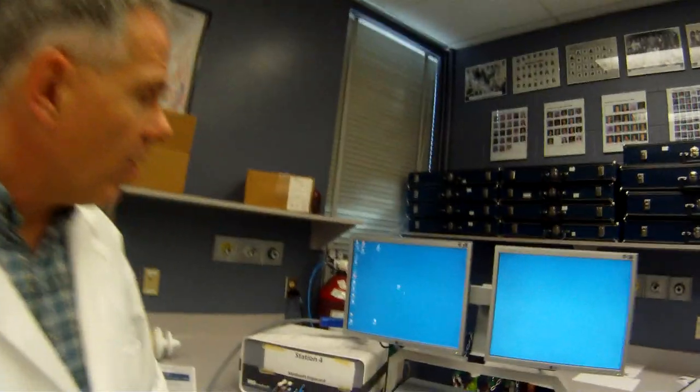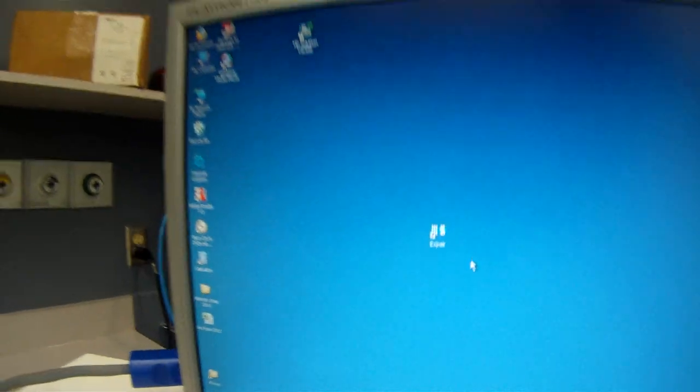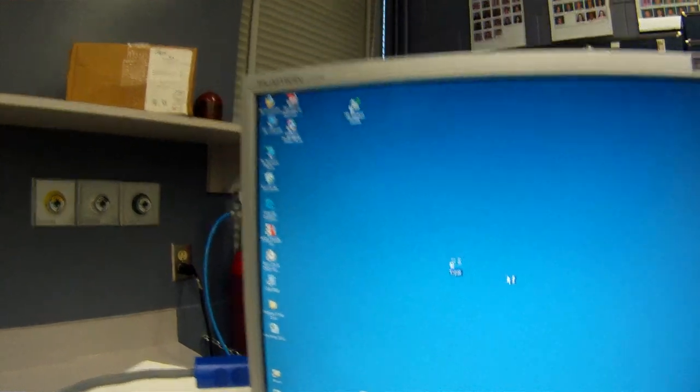All I'm going to show you how to do is basically how to get the software up and running and how to do a calibration. So let's take a quick look here. First thing you need to do is we've got to click on the Xpire software, get that running.